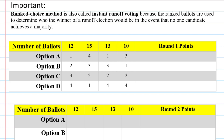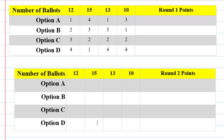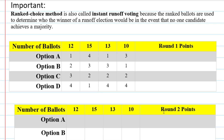I actually like to work these problems on a computer rather than on paper, just because it's easier to copy and paste the entire preference summary and work with it that way rather than to write it all down on paper. So here I've taken my preference summary, added a column to the right for the total points for each candidate, and I put a couple of blank copies in here to get me started.